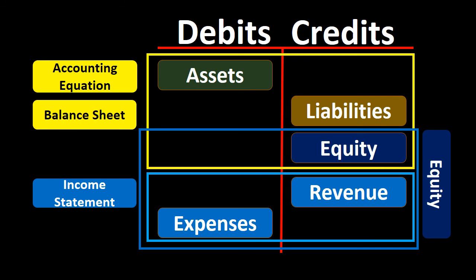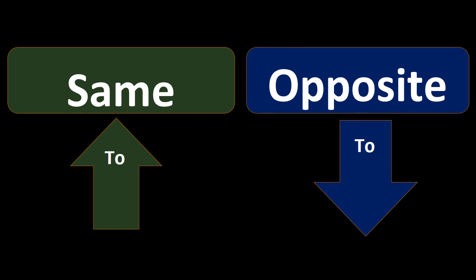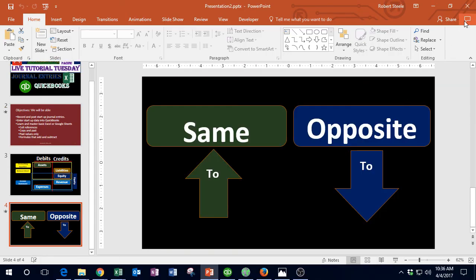Revenue on the income statement has a credit normal balance, and expenses have a debit normal balance. We need that cheat sheet so that when we ask how to make accounts go up or down, we can apply a simple rule: the same thing makes it go up, the opposite makes it go down. If you don't have this memorized, the second-best cheat sheet is a trial balance — I recommend keeping it open at all times.